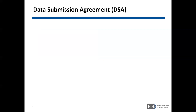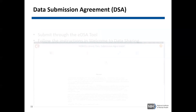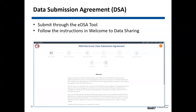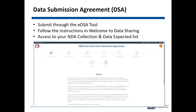The data submission agreement must be submitted through the EDSA tool, or the electronic data submission agreement tool. The PI of your NDA collection should follow the instructions they received in the welcome to data sharing email when their NDA collection was first created. Once the PI completes the DSA, they will be given access to the NDA collection and the data expected list.